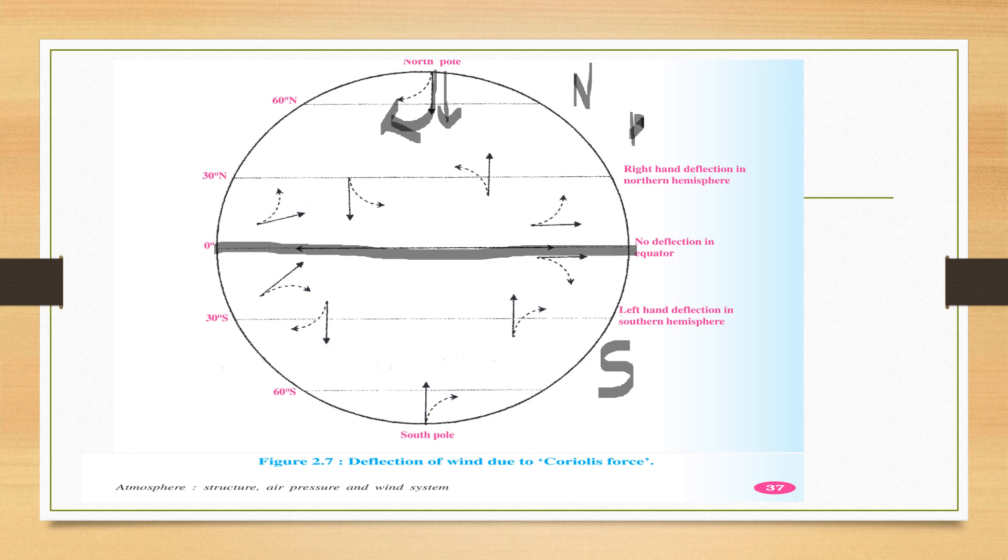And Southern Hemisphere me, jho force hooga, woh left ki taraf deflect karegi. Hawa left ki taraf deflect karegi. Agar wohi Northern Hemisphere me, hawa is taraf se aarehi hai, niche se upar jari hai, toh right ki taraf deflect karegi. Wohi Southern Hemisphere me, ulta hai. Agar hawa North Pole se niche ki taraf jari hai, toh woh left ki taraf deflect karegi. Toh hawa, chalhi jati hai, is tarh. And agar South Pole se, oopar ki taraf jari hai, toh wohi left pe chaigi. Toh is tarh deflect karegi. This is what is the deflection of wind due to Coriolis force.